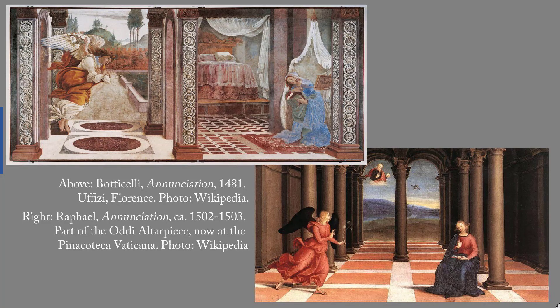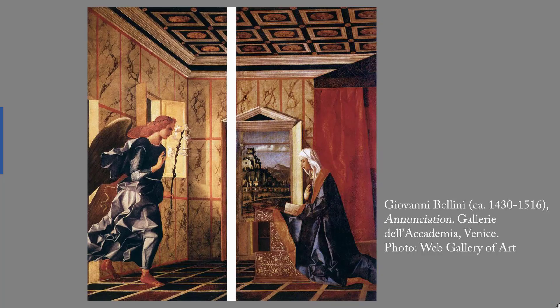The upper left is a Botticelli from 1481 — in fact the very end of the 15th century — and the one by Raphael at the lower left is from the very beginning of the 1500s. As a bonus, this one is by Giovanni Bellini; it isn't mentioned in The Di Domenico Fragment, but I've included it because the robes of the angel are just so startling.